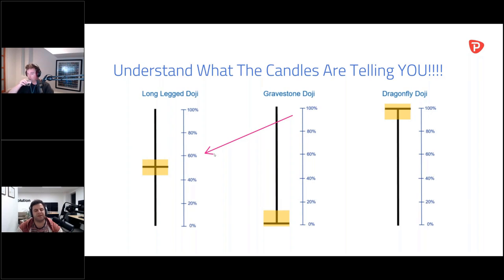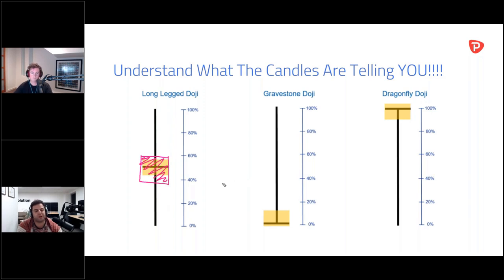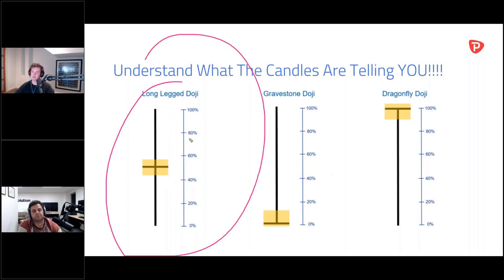A long-legged doji is an indecision candle — price action has gone to the upper end of the range, the lower end, and ended up where it started, around the middle. Buyers tried to take it all the way up, sellers tried to take it all the way down, and they ended up in the same spot. We define it as any candle with an open and close finishing between the 40 and 60% mark of its range. It won't look exactly like that every time — it's what price represents that matters.